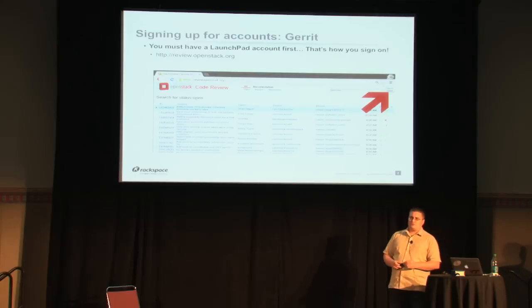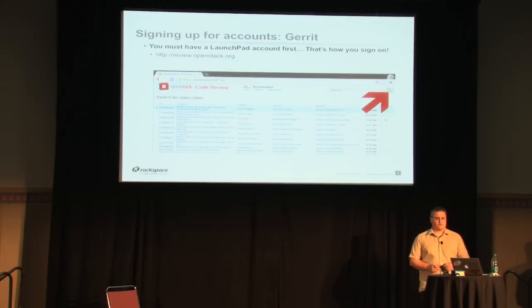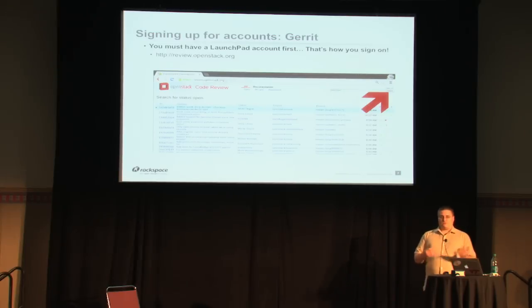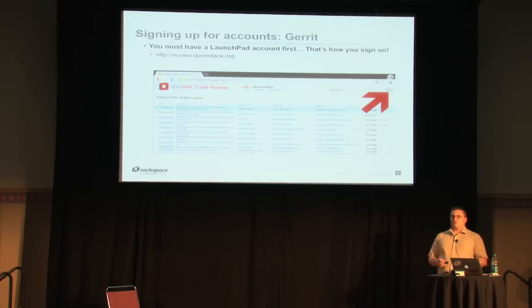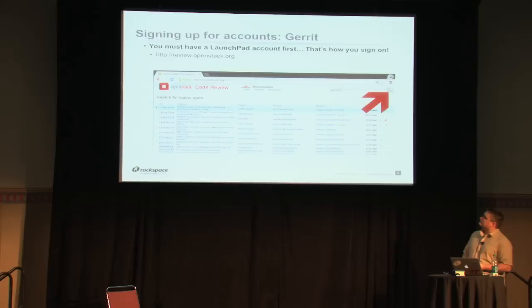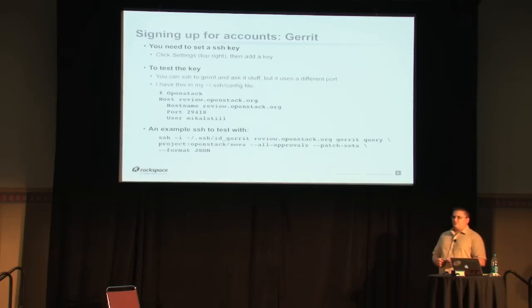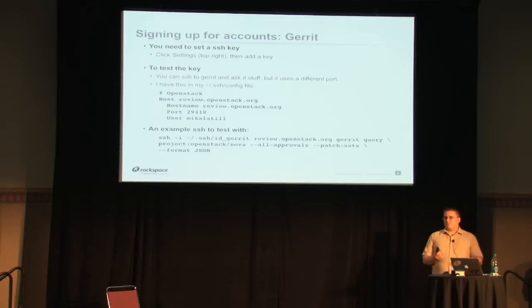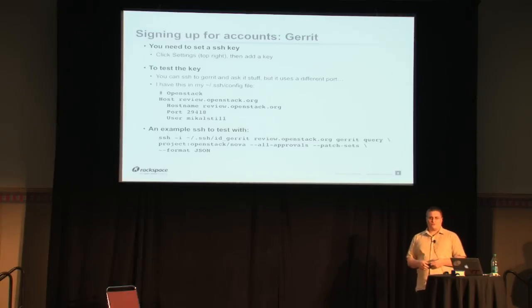The next thing you need to do is sign up for Gerrit. Gerrit is our online code review system. It was originally written for the Android project, but we've tweaked it a little. If you go to review.openstack.org, there's a sign-up link at the top right. Once you've written your code and submit it for review, cores and other people are going to start reading it and commenting on it and looking at diffs. To interact with Gerrit, you need to upload an SSH key because the protocol Gerrit uses for everything is SSH. That can be a key you generate especially for this or one you've used before — it kind of depends on how you feel about security.